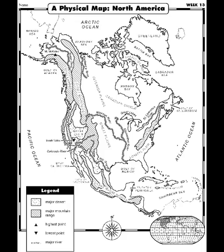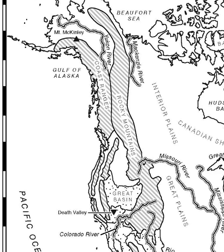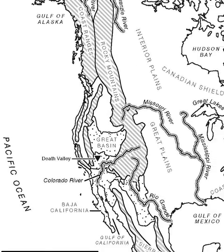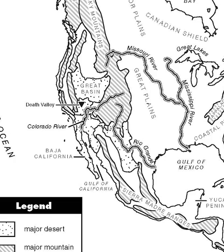First, the coastal ranges that expand from Alaska to Mexico. Familiar ranges in this area are the Alaska Range, Olympic Mountains, the Cascade Range, and the Sierra Nevada Range.